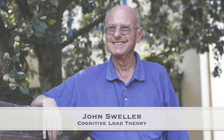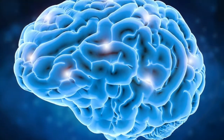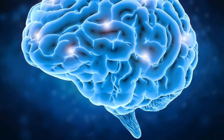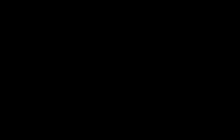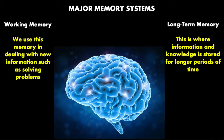John Sweller's cognitive load theory, developed in the late 80s, might help us answer that. Our brain has two major memory systems: working memory and long-term memory. We use our working memory when dealing with new information, such as solving a problem.